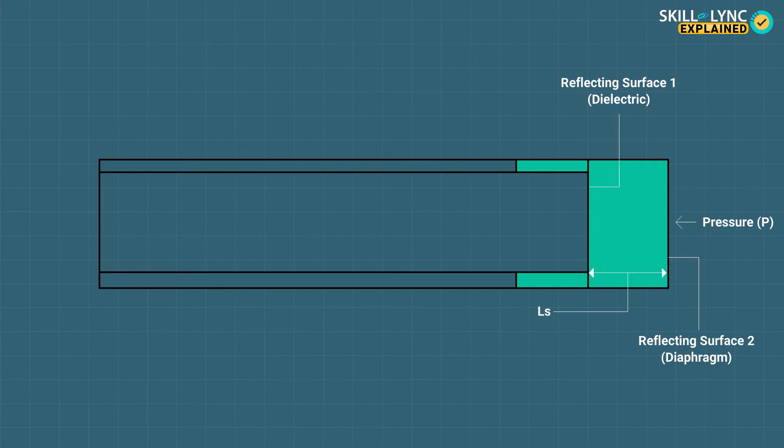The two reflecting surfaces are kept at a distance of LS, and this cavity between the two surfaces is termed as Fabry-Perot cavity. By measuring the distance LS, the unknown pressure can be determined.